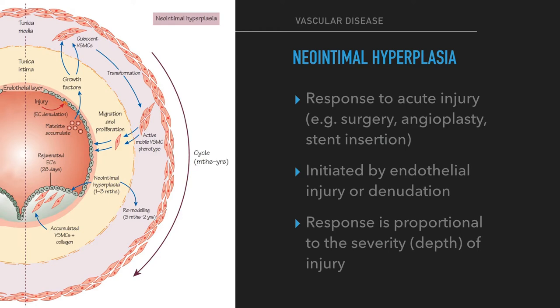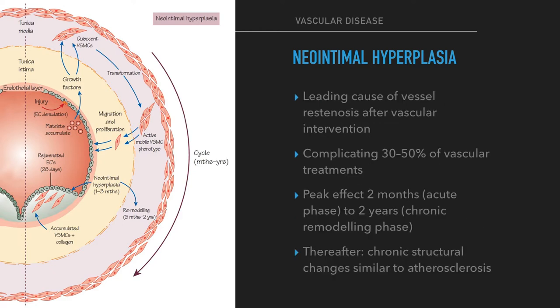Neointimal hyperplasia, often also referred to as myointimal hyperplasia, is the vascular histological response to acute injury — for example surgery, angioplasty, or stent insertion — initiated by endothelial injury or denudation. The response is proportional to the severity or depth of injury. Neointimal hyperplasia is the leading cause of restenosis in both the medium and long-term after vascular intervention, complicating 30–50% of vascular treatments. Its peak effect occurs between two months, the acute phase, and two years, the chronic remodeling phase.